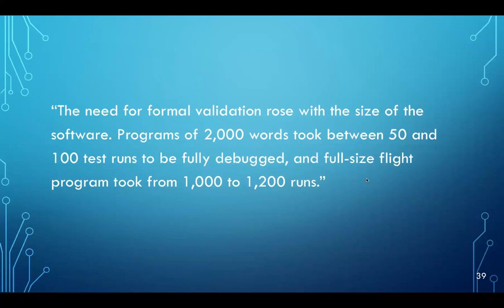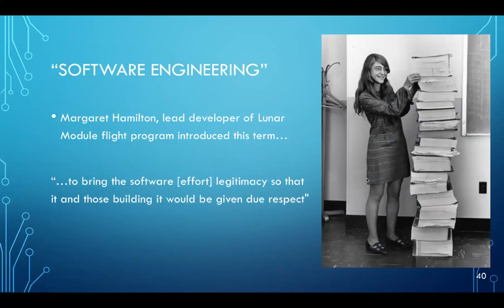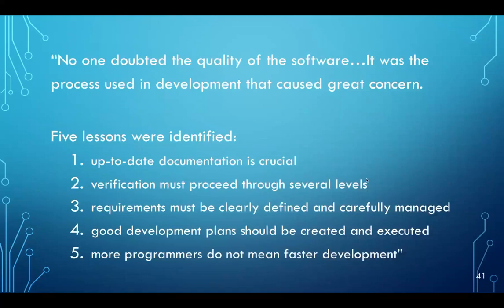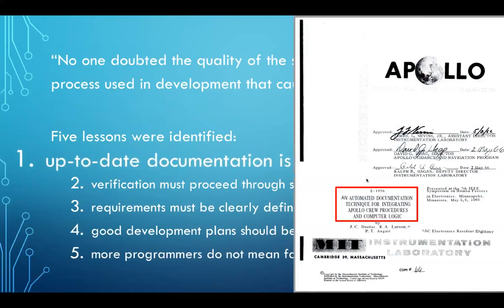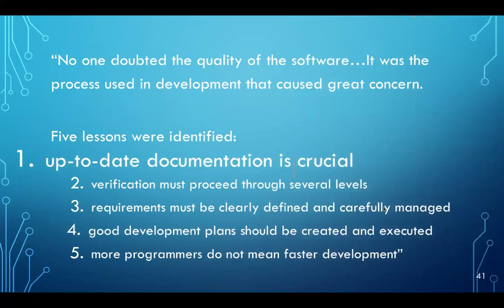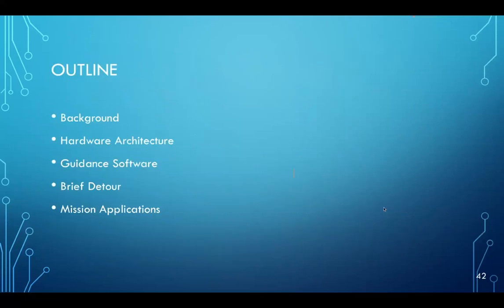Let's see. The project was about 25 billion in 1965, which equates to just a little over 200 billion in 2019 dollars. And if you average that over the 10 year period of the project, it would have been 20 billion a year. The guidance system itself was 600 million in 65, which translates to 5 billion in today's dollars or about 500 million per year. The software effort alone was 60 million, which translates to about 100 million per year in today's dollars because the software was really compressed into five years. This gives you a rough idea of the level of effort in each aspect of the software development, analysis, coding, testing, documentation, and management. By testing, by the way, here, I'm actually referring not to the hardware resources used in testing or the personnel necessary to support testing, but just test development processes. Just some quotes from documentation that I found. The need for formal validation rose with the size of the software programs of 2000 words took between 50 and 100 test runs and full size flight programs took 1000 to 1200 runs. The term software engineering was actually introduced by this woman, Margaret Hamilton. She was one of the lead developers on the lunar module flight program. She did so to bring the software effort legitimacy so that those building it would be given due respect. No one doubted the quality of the software. It was the process used in development that caused great concern.